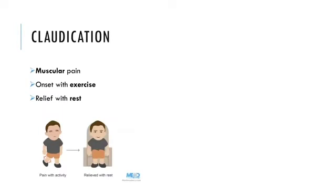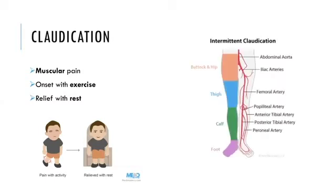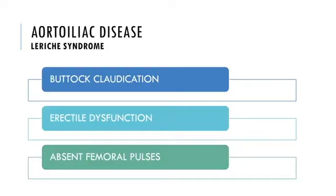Claudication is muscular pain with exercise that is relieved with rest. During exertion, the supply-demand mismatch causes temporary ischemia and pain, usually in the muscle group below the level of disease. So the location of claudication and a thorough pulse assessment points towards which arteries are diseased. Since the superficial femoral and popliteal arteries are most commonly affected, claudication is often localized to the calf. Foot claudication often means infrapopliteal disease, and thigh claudication indicates common femoral disease. Aortoiliac disease can cause a triad of hip and buttock claudication, erectile dysfunction, and absent femoral pulses, called Leriche syndrome.